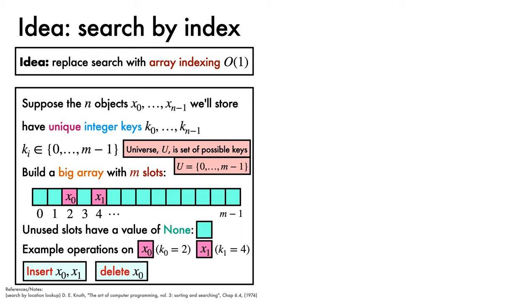To delete x0, we go to its index, which is 2, and replace the contents with a none value. Finally, to search for the object in our data structure with a given key, in this case 4, we just look at index 4, and return its contents, which in this case was x1.